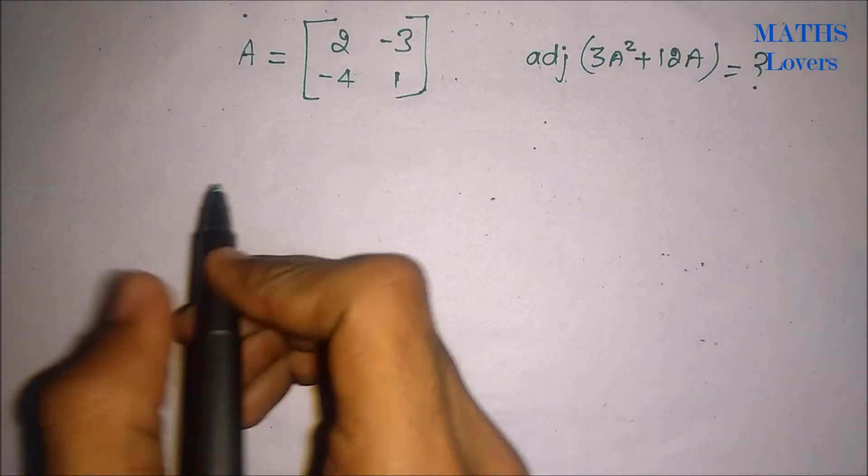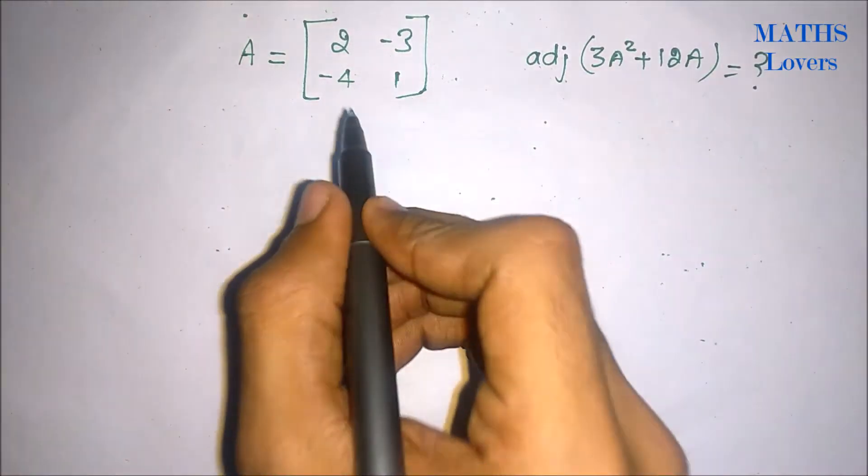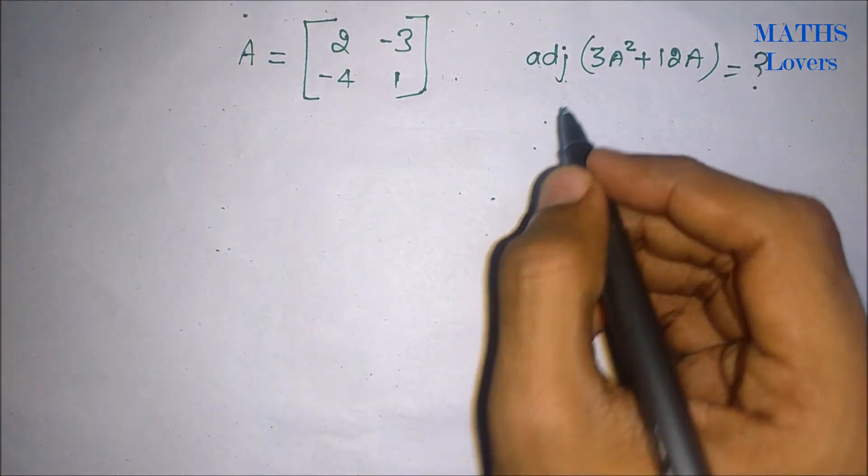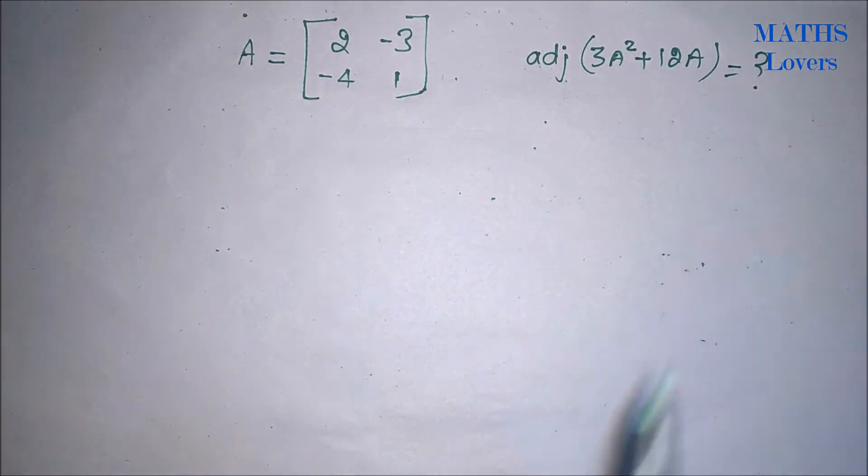Hello friends, in this video a matrix is given as A equals 2, minus 3, minus 4 and 1, and we want to find the adjoint of 3A squared plus 12A.